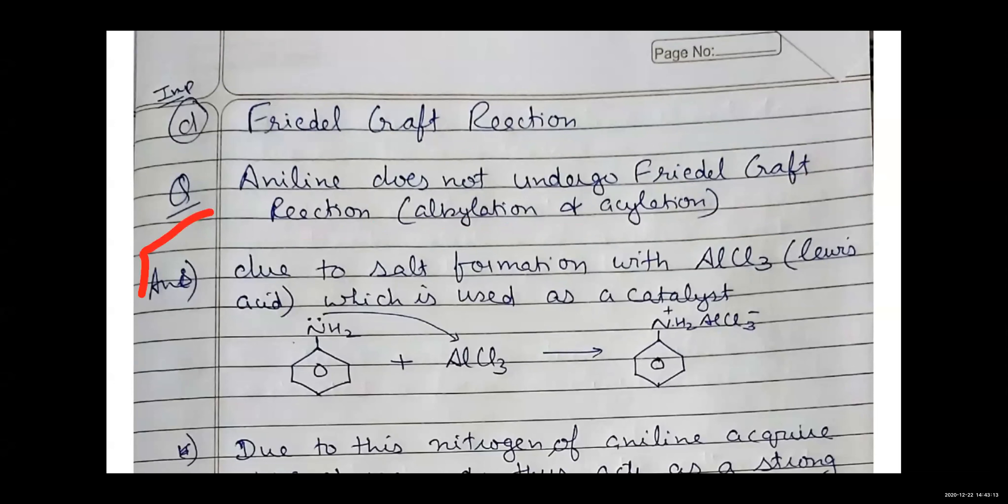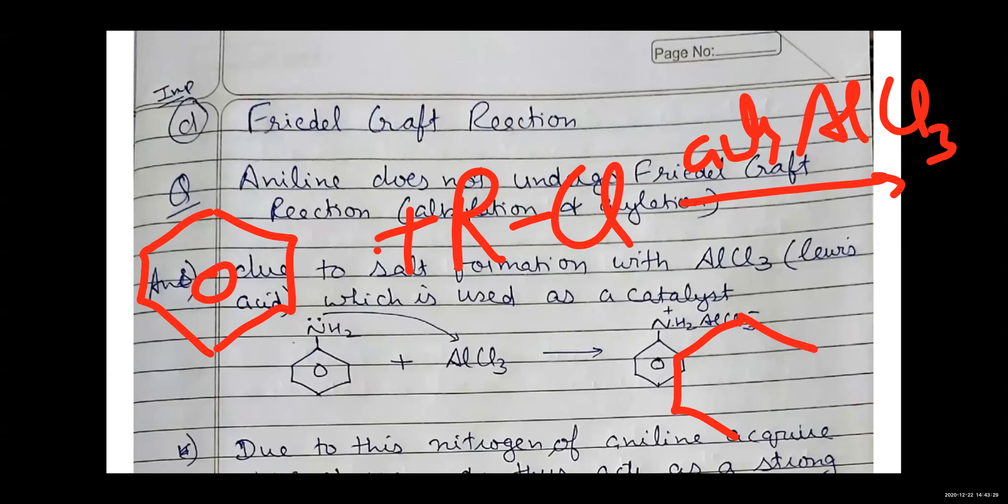I will tell you again that suppose you have a benzene ring. If you want to do Friedel-Craft alkylation, then you will have to react with RCl in the presence of anhydrous aluminum chloride. So what will happen? It will be alkylation and the R group will come here.